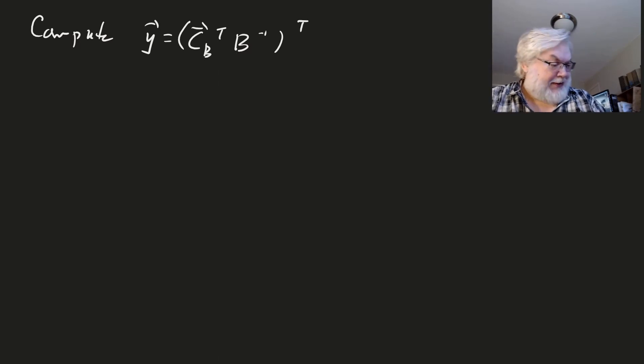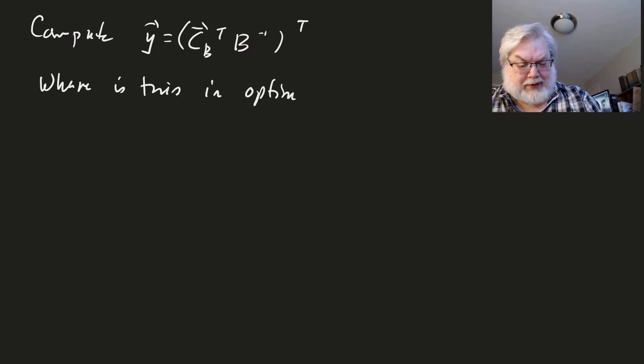So in particular, we're trying to compute the dual. We're trying to compute CB transpose B inverse, and you can put a transpose on that or not. And so the question is, where does this appear? Where is this in the optimal tableau? Can we just pull it off of the tableau without having to make this computation separately?